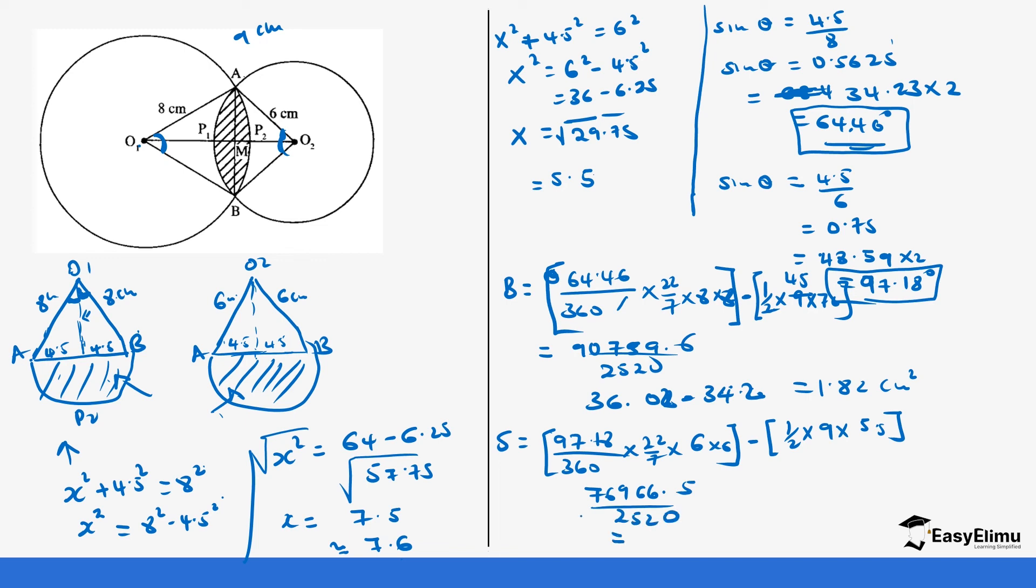97.18 times 22 times 6 times 6 gives us 76,966.56 divided by 2,520, which gives us 30.54. And then the area of the triangle is going to be one half times 4.5 times 5.5, which gives us 24.75. If we do the subtraction, you get 30.54 minus 24.75.